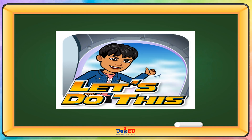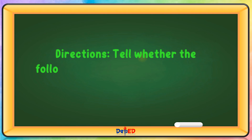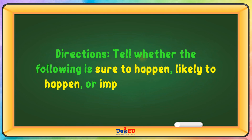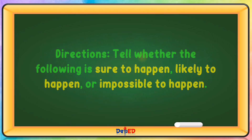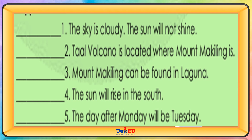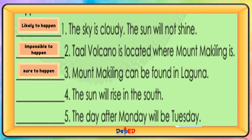Let's do this. Directions: Tell whether the following is sure to happen, likely to happen, or impossible to happen. The sky is cloudy and the sun will not shine — this is likely to happen. The volcano is located where Mount Makiling is — this is impossible to happen. Mount Makiling can be found in Laguna — this is sure to happen. The sun will rise in the south — this is impossible to happen. The day after Monday will be Tuesday — this is sure to happen.